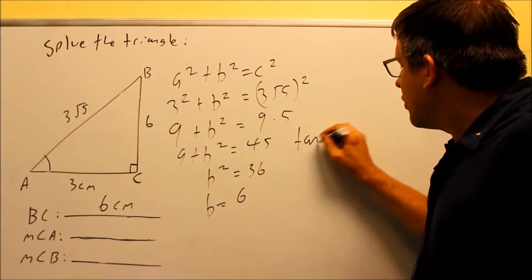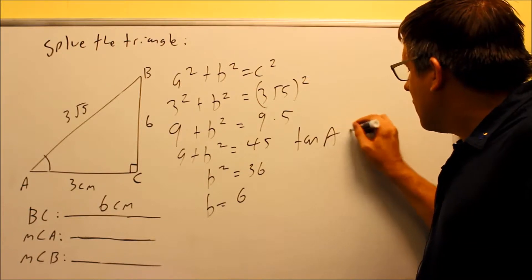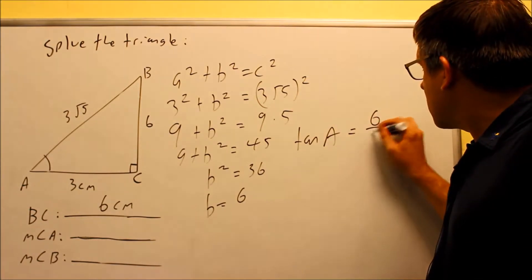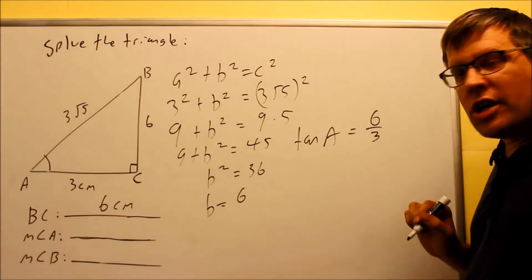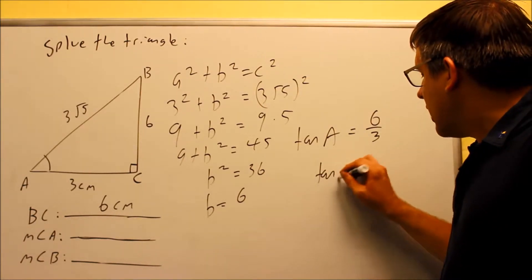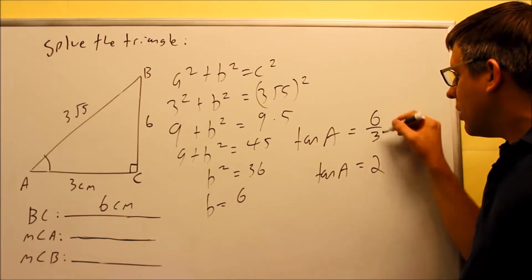So what I'll do is I'm going to do tangent of A is going to have to equal 6 over 3, opposite over adjacent. Or I'll get tangent A equals 2 if I simplify.